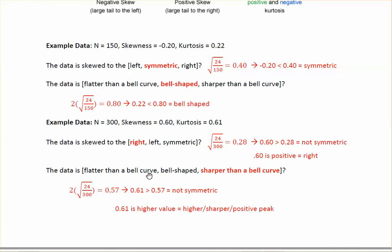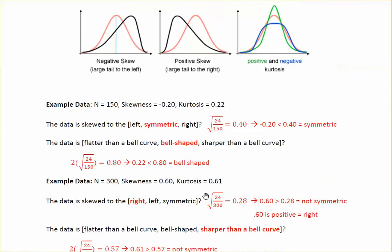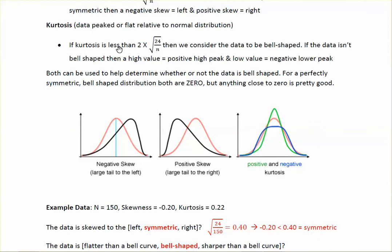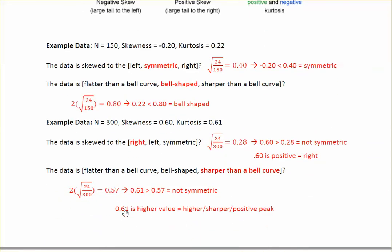For kurtosis in Example 2, we multiply 0.28 by 2 to get 0.57. Our kurtosis of 0.61 is greater than 0.57, so the data is not bell-shaped. Since 0.61 is a positive value, that indicates a higher, sharper, positive peak — sharper than a bell curve.